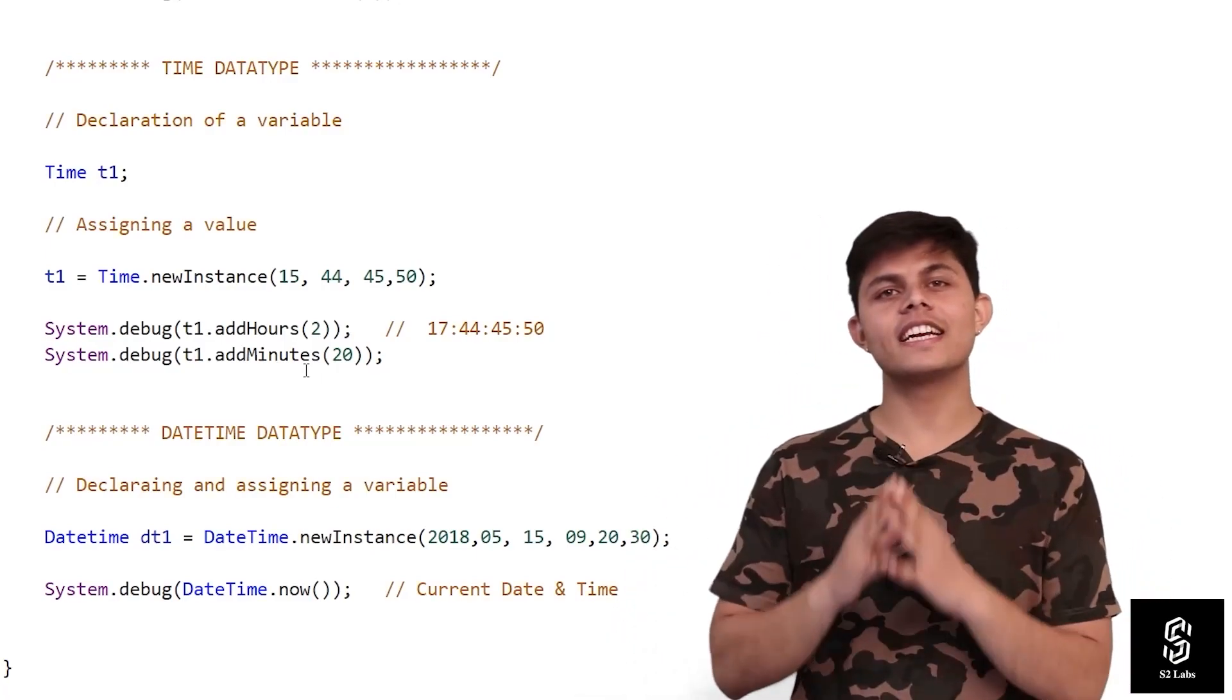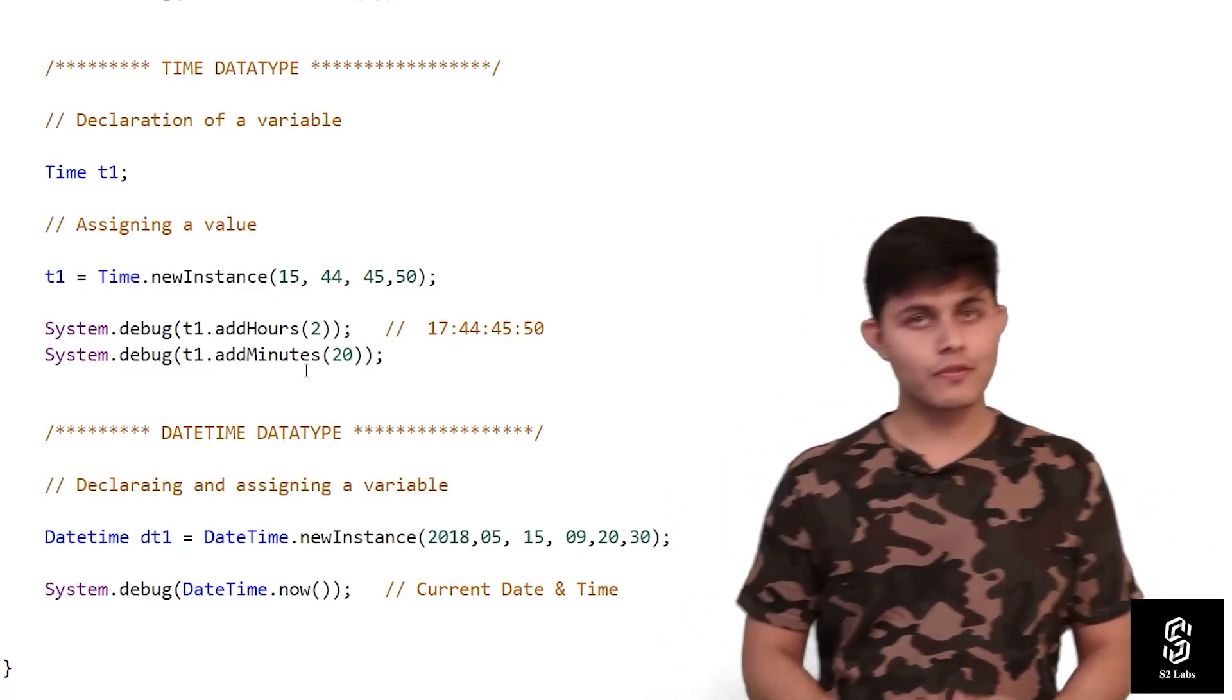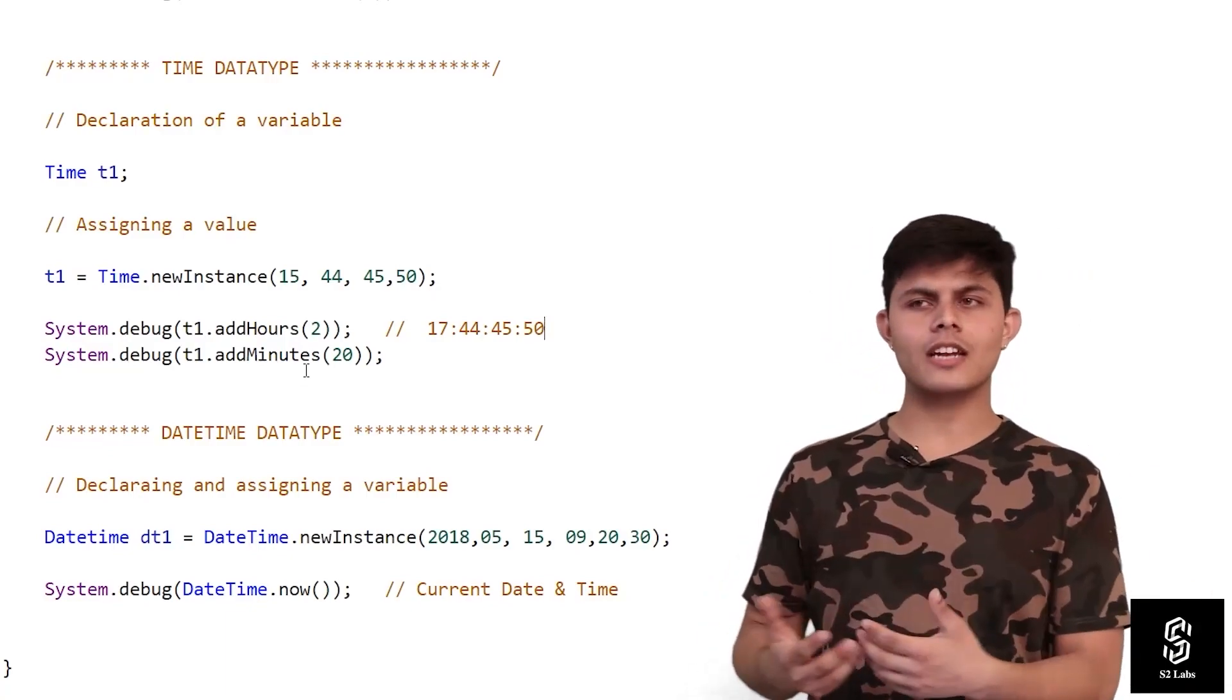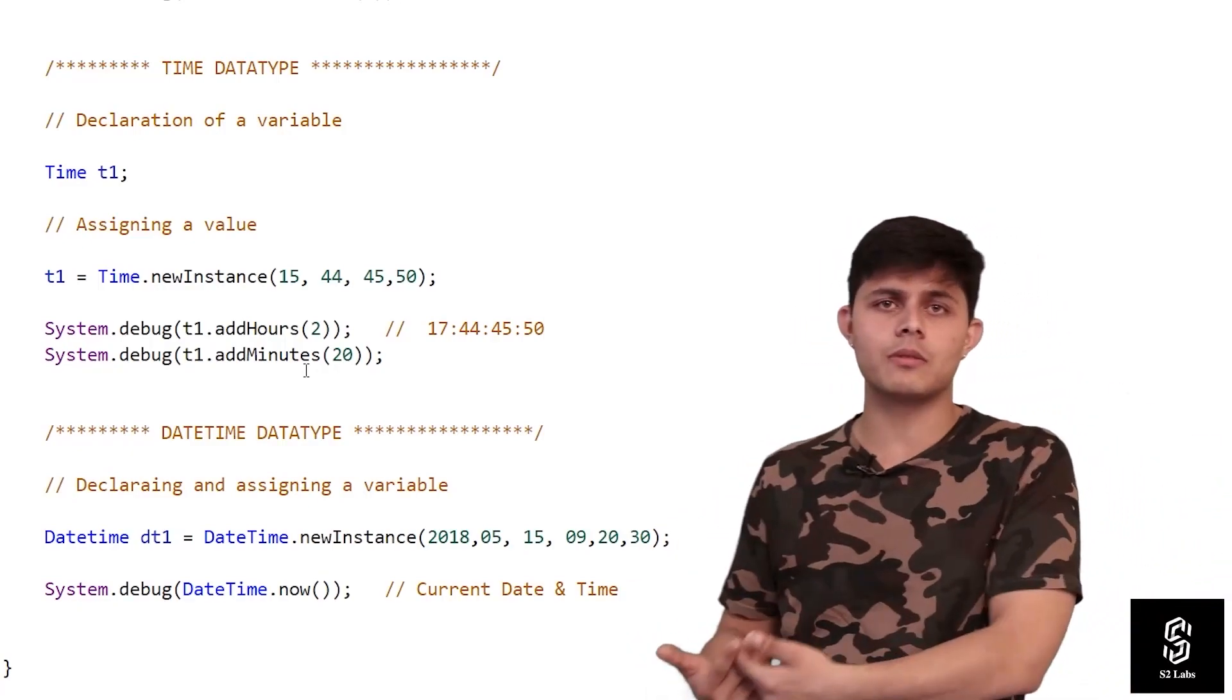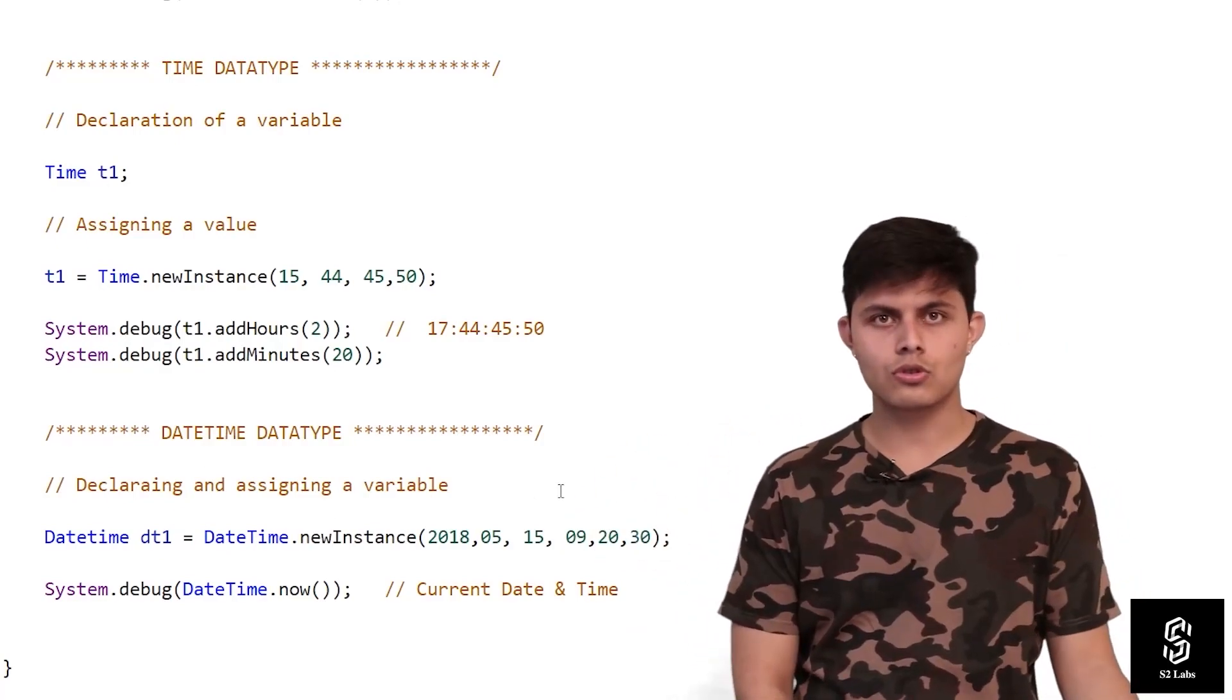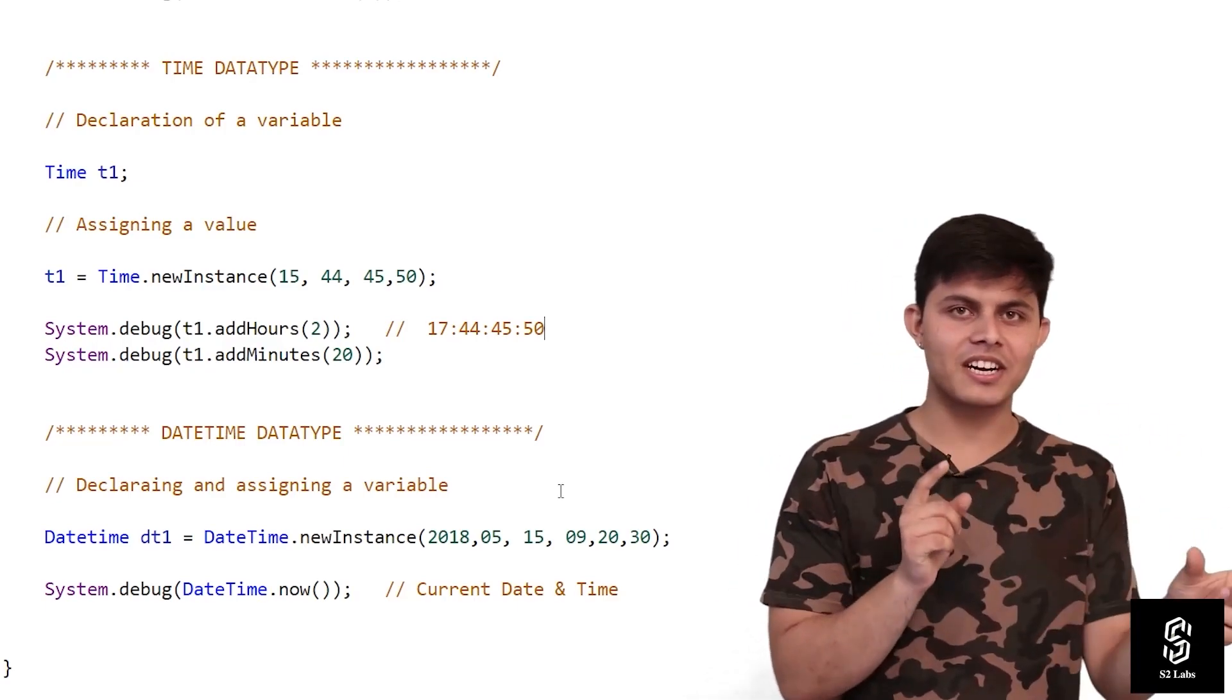Now let's talk about a data type that can store both date and time, called DateTime. We generally use this for information like when a record was created or modified. To store both date and time, use the DateTime data type with a variable declaration.